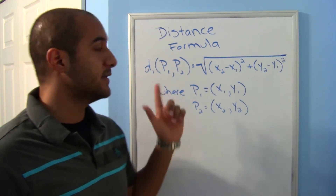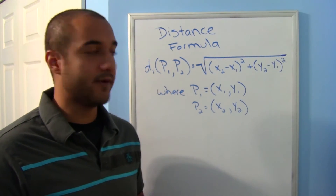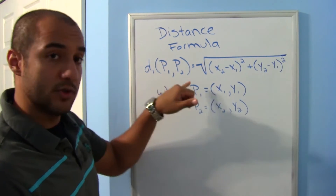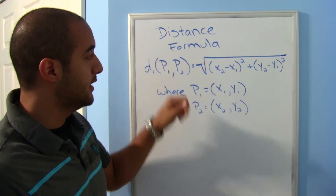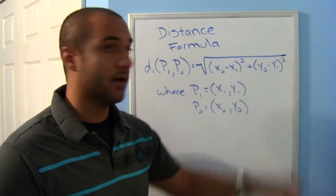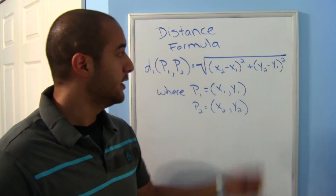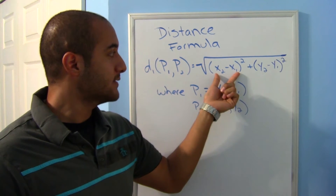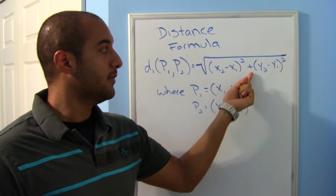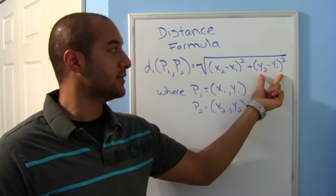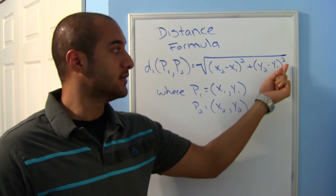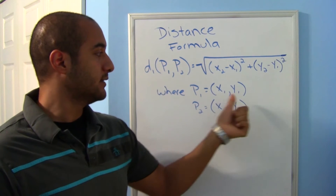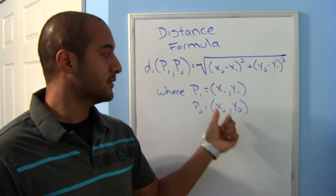One of the main things here is using the distance formula to find how far apart two points are. The distance between two points is given by the square root of the difference of their x-values squared, plus the difference of their y-values squared.